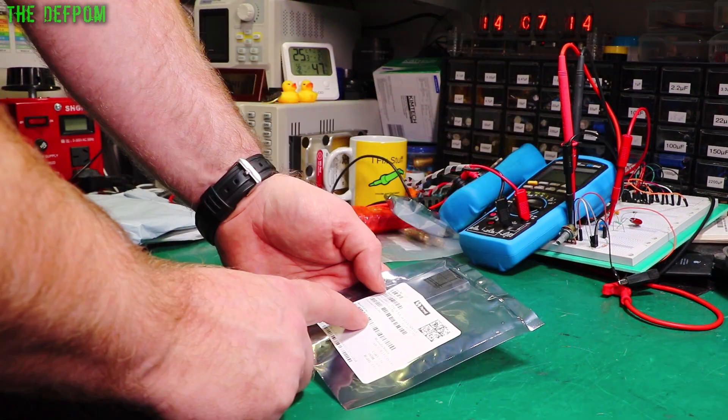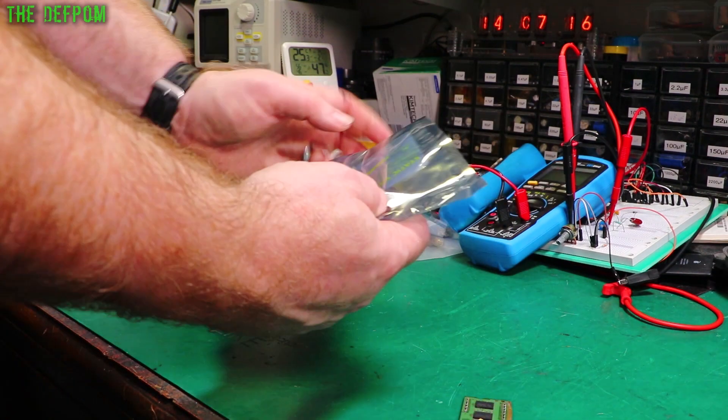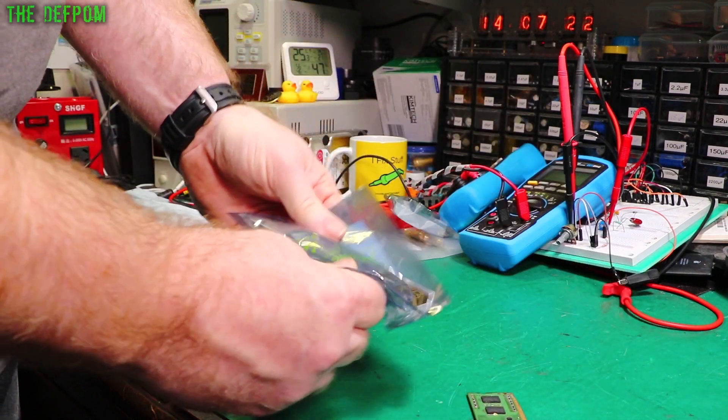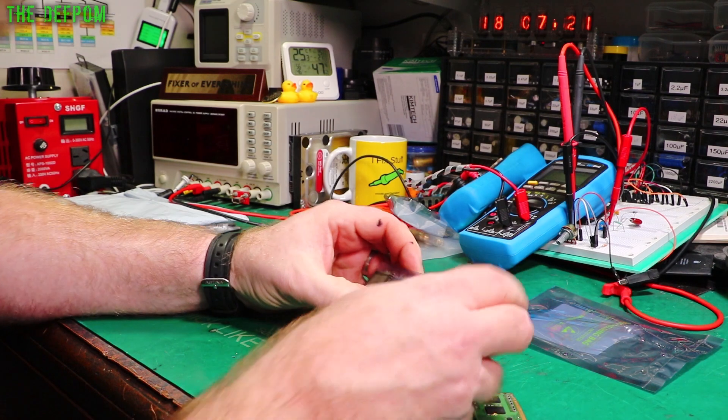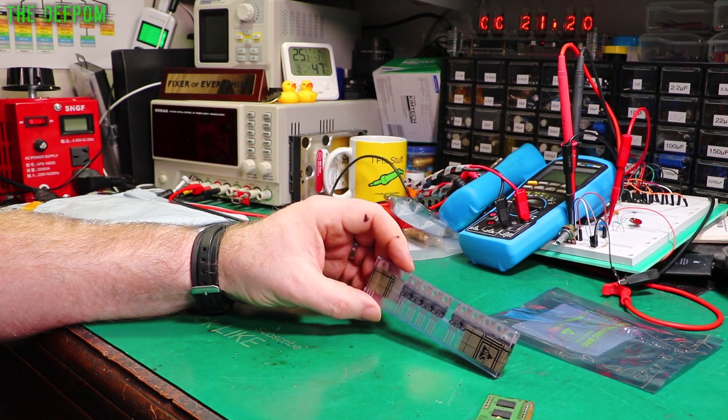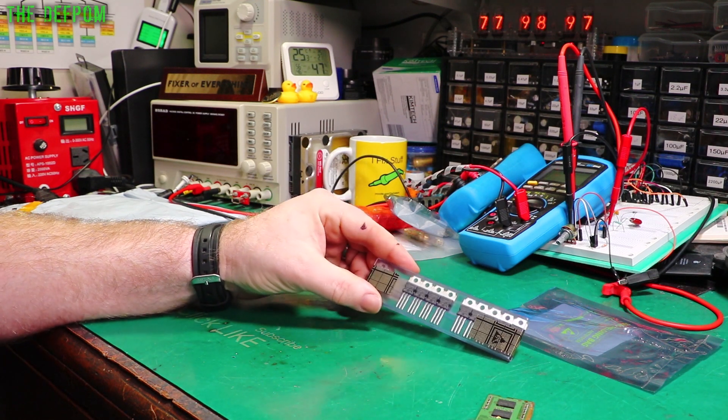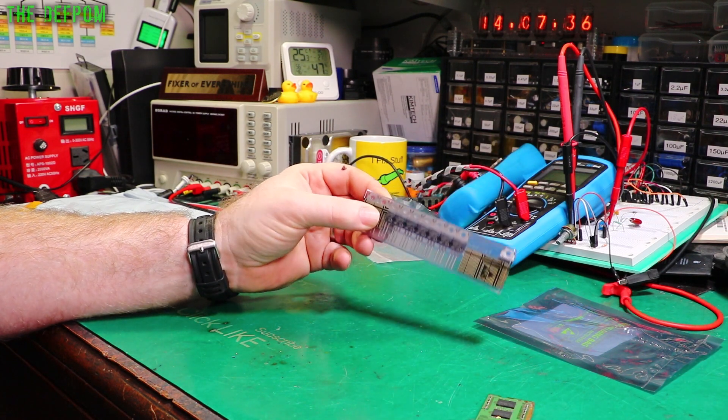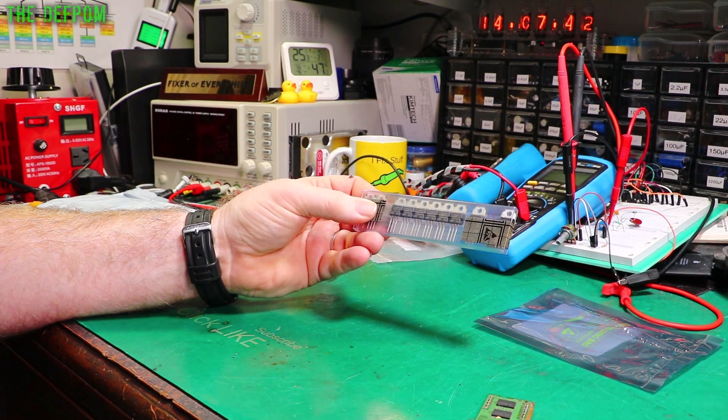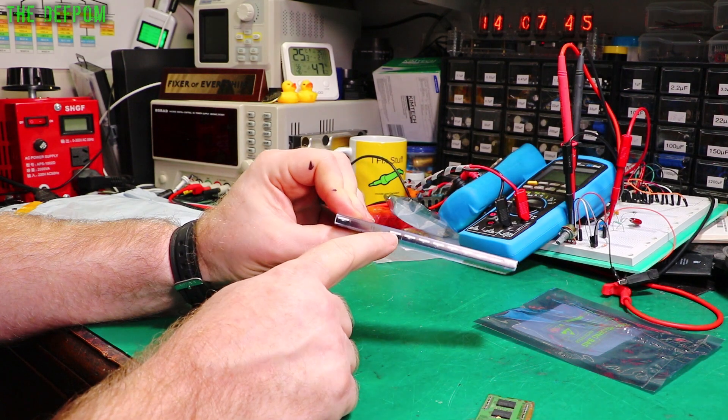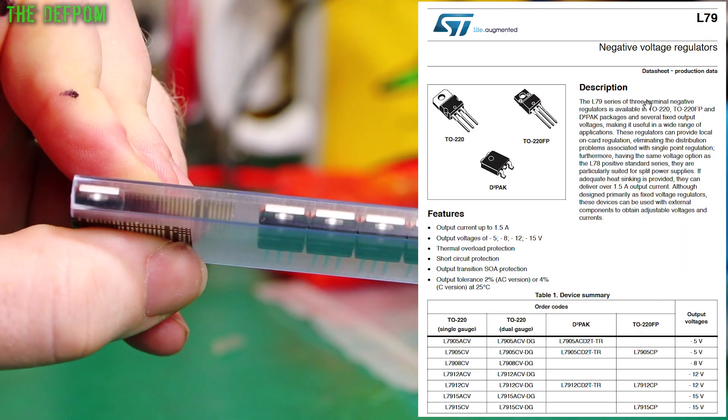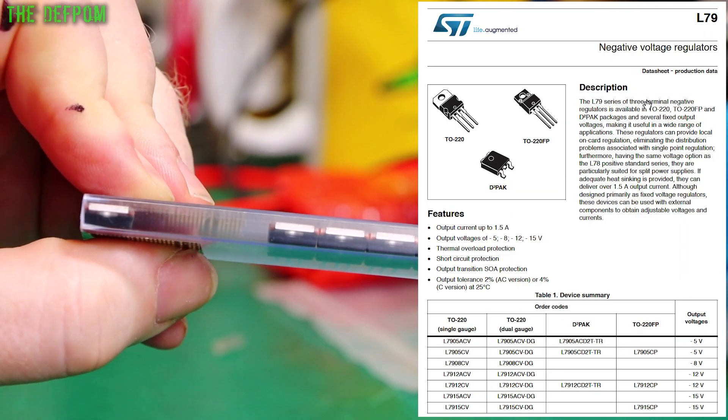What are these? 7915 ACs. Okay. Yep, a whole bunch of brand new ones. So L7915 ACV. These are 1.5 amp negative 15 volt voltage regulators in a TO-220 package, but it's got these cut-off corners on them. That's what the ACV means. So that's the difference. It's got a thicker back on it. The actual mounting tab is thicker than a standard transistor. That's what the V meant, something like that.